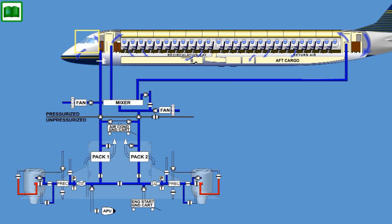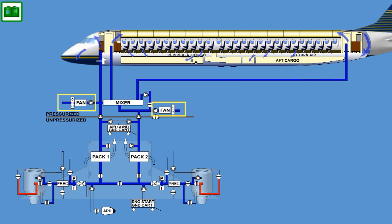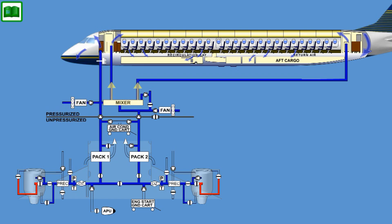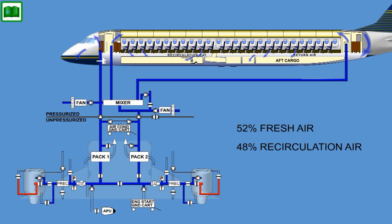Air recirculation from the cockpit and passenger compartment is provided via two recirculation fans located in the pressurized section of the airplane. The recirculation fans draw air from the recirculation bays, direct them to the mixing chamber, and impel the air back into the distribution system. The total flow entering the cockpit and the passenger cabin is made up of approximately 52% fresh air and 48% recirculation air.